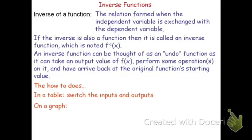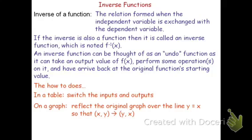If it's on a graph, it's going to involve a reflection. You're going to reflect the original graph over the line y equals x. When you do a reflection across the line y equals x, that means you're going to switch the x and y's position.